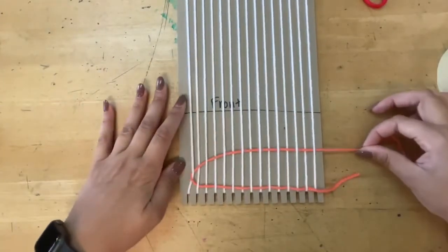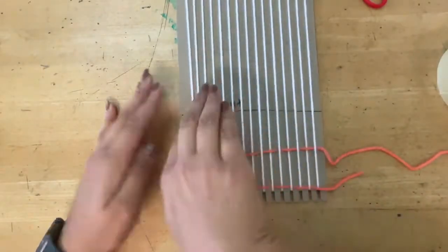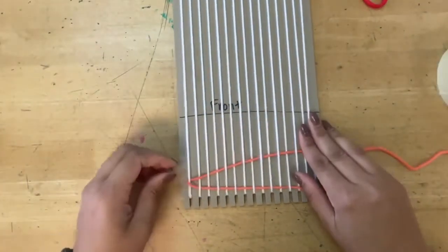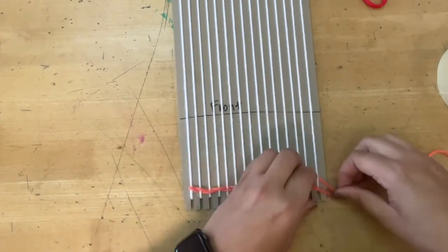Common error: if you pull too tight, your warps are going to start to bow in like this. We don't want that, so keep it loose. And then I am shimmying it down.